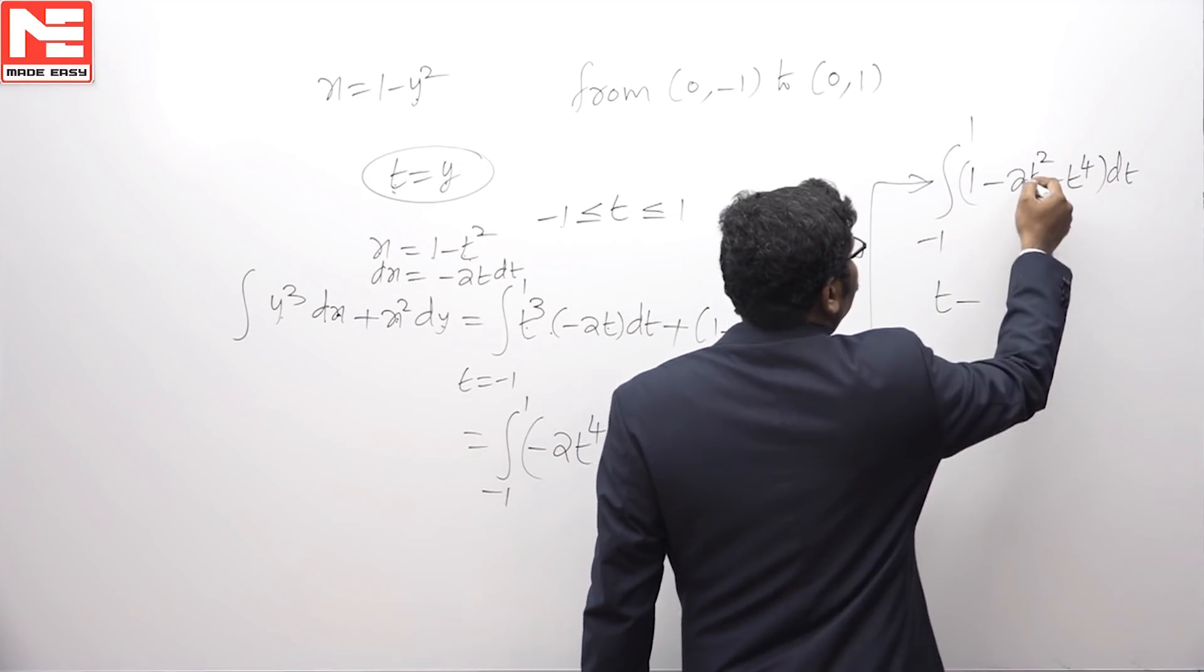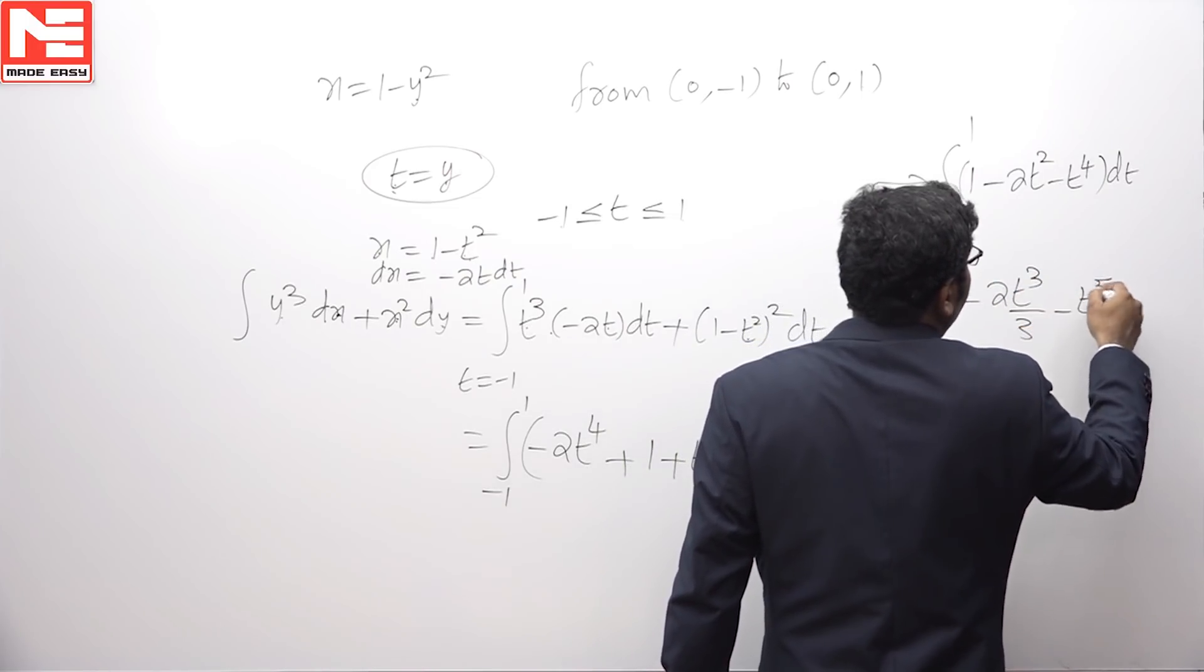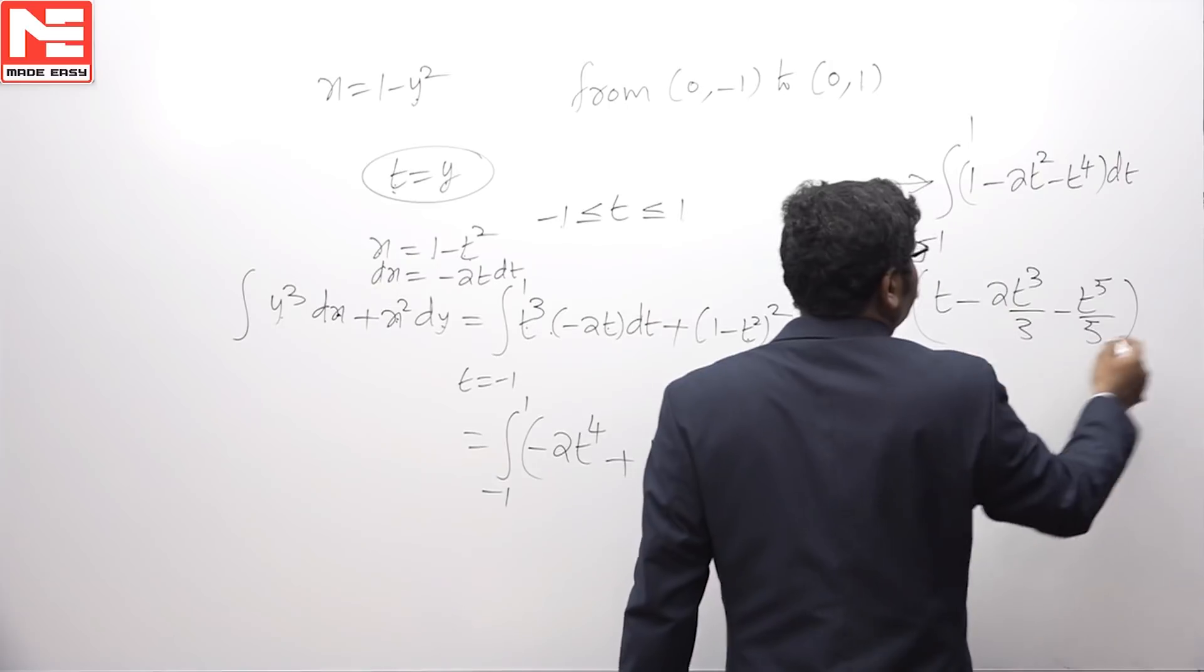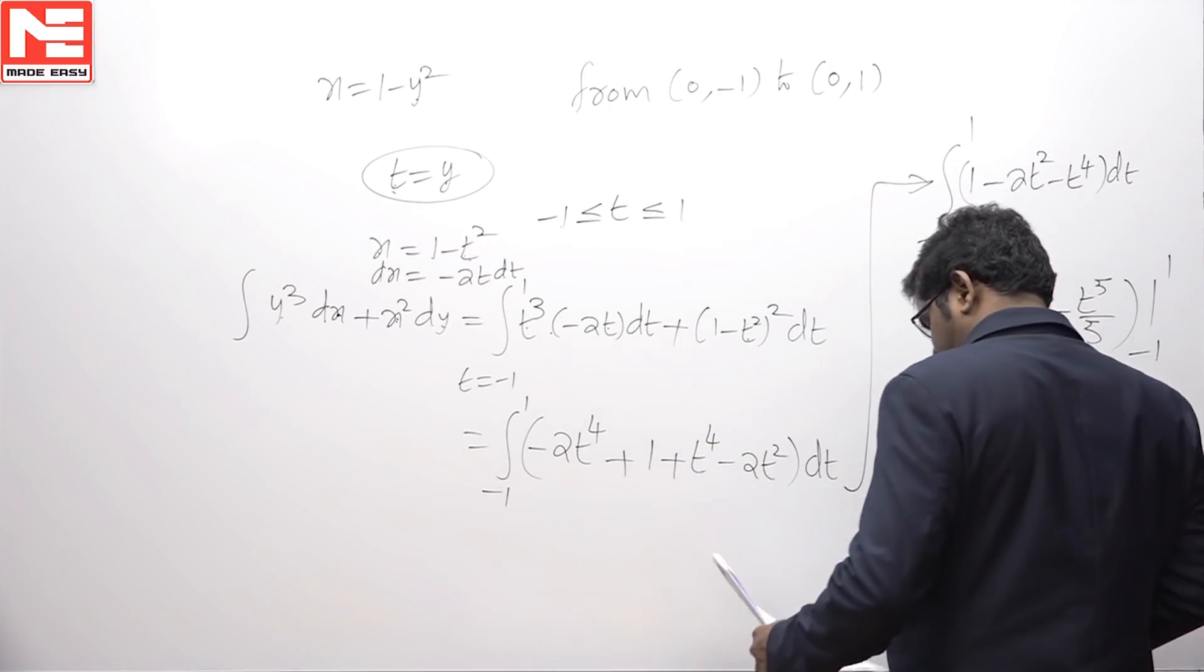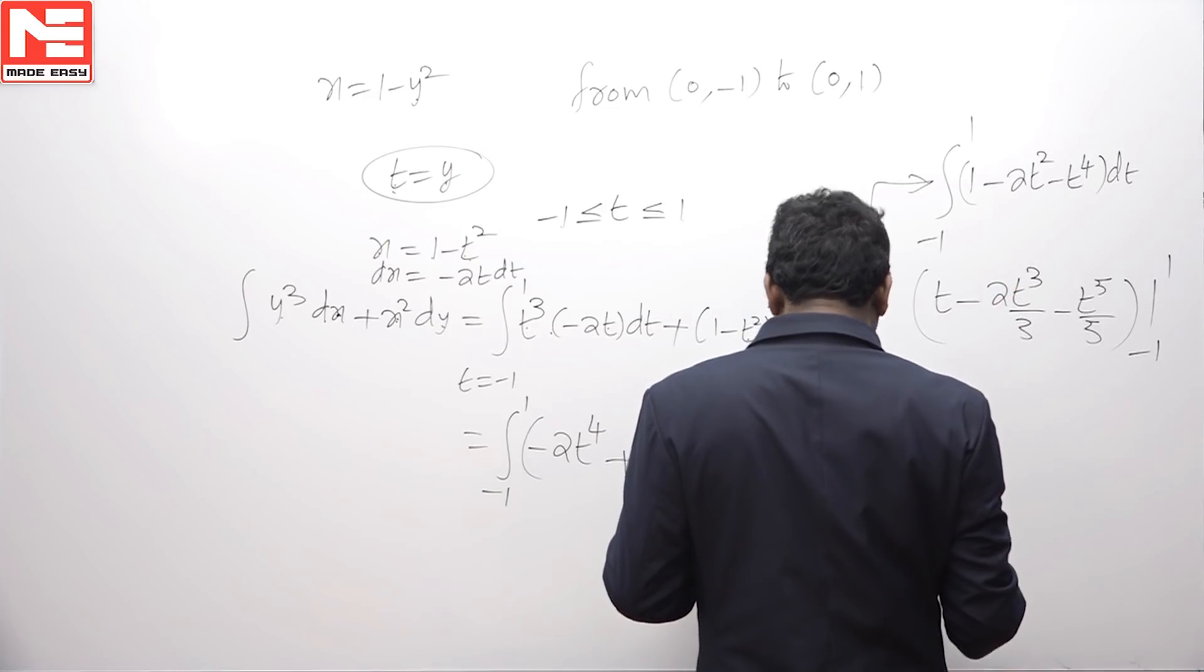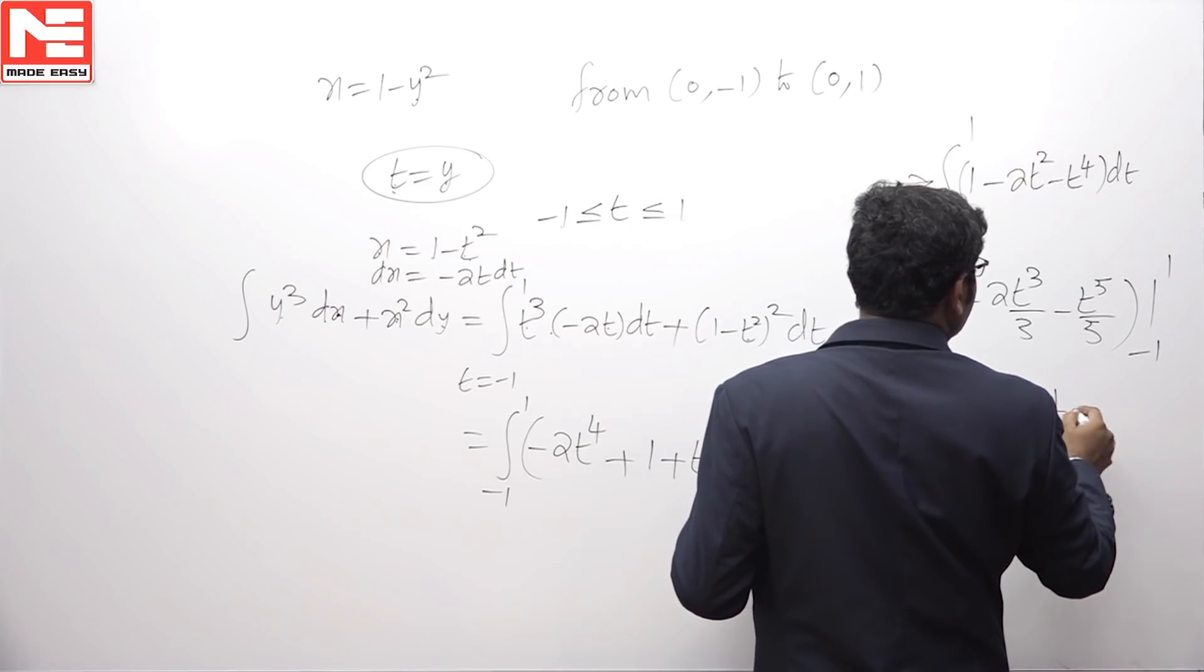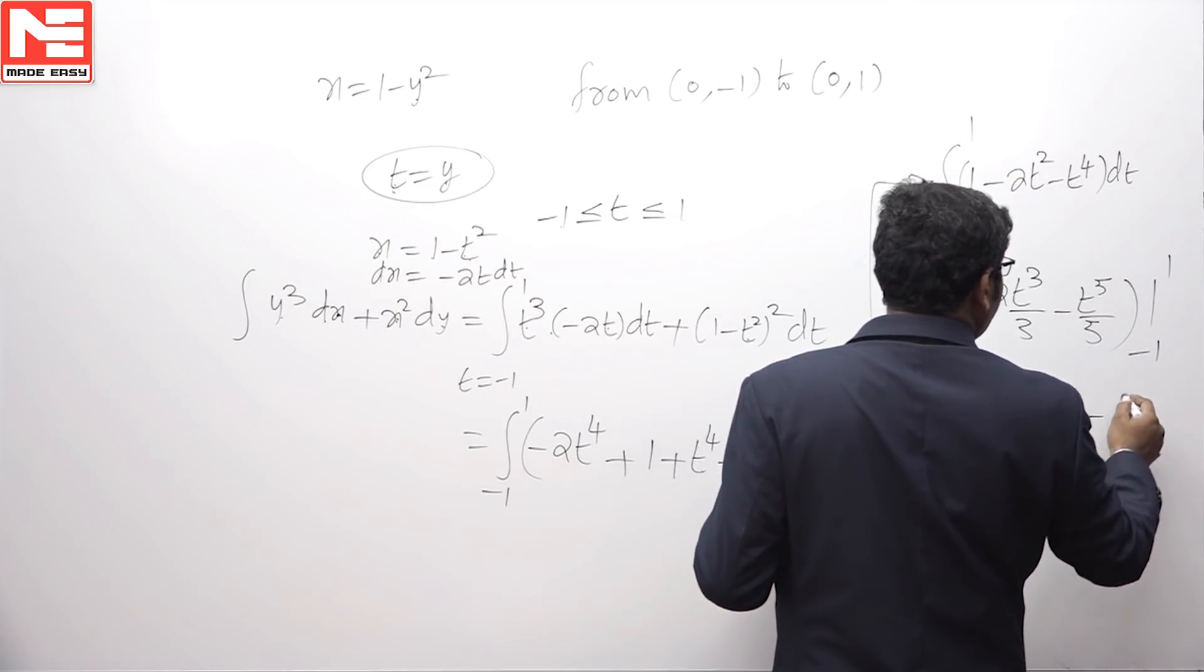This integrates to t - 2t³/3 - t⁵/5 from -1 to 1. By applying upper limit and lower limit we get 1 - 2/3 - 1/5 minus